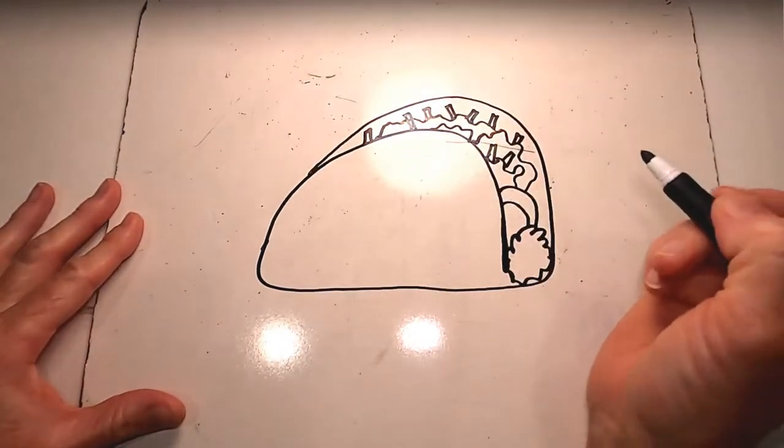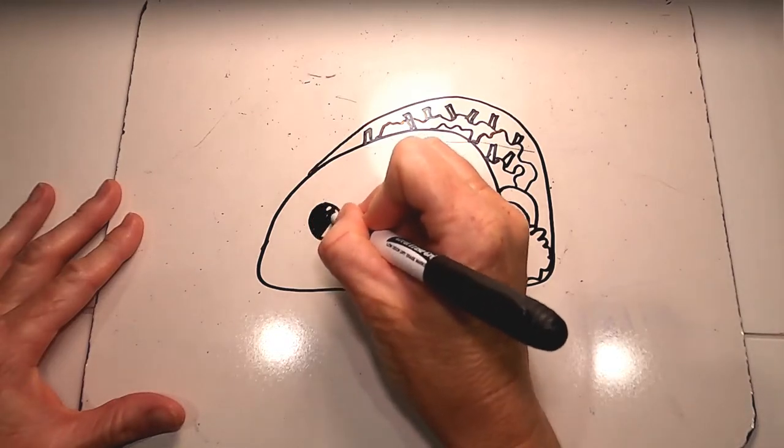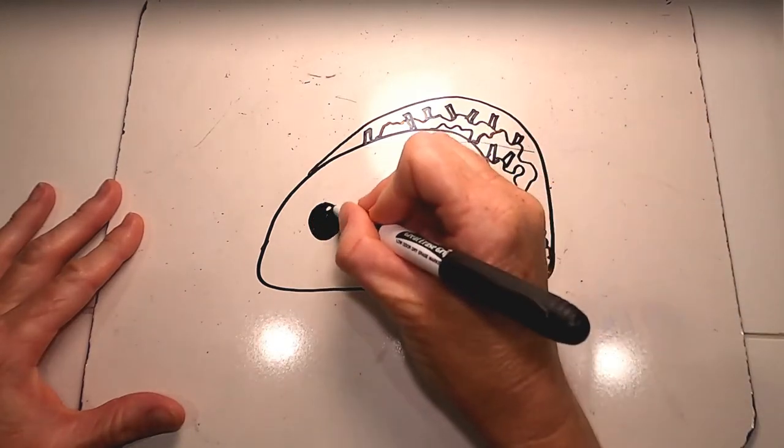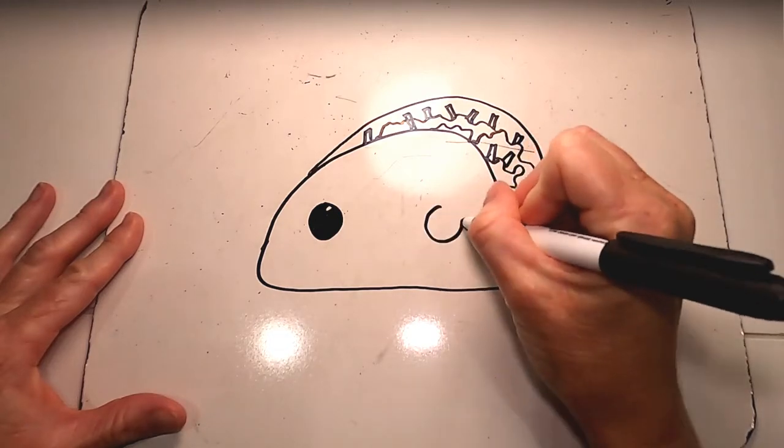I'm then going to make my taco friendly. So an eye. There we go. Leave a little area of white on the eye. Kind of makes it look shiny. It's sort of fun.